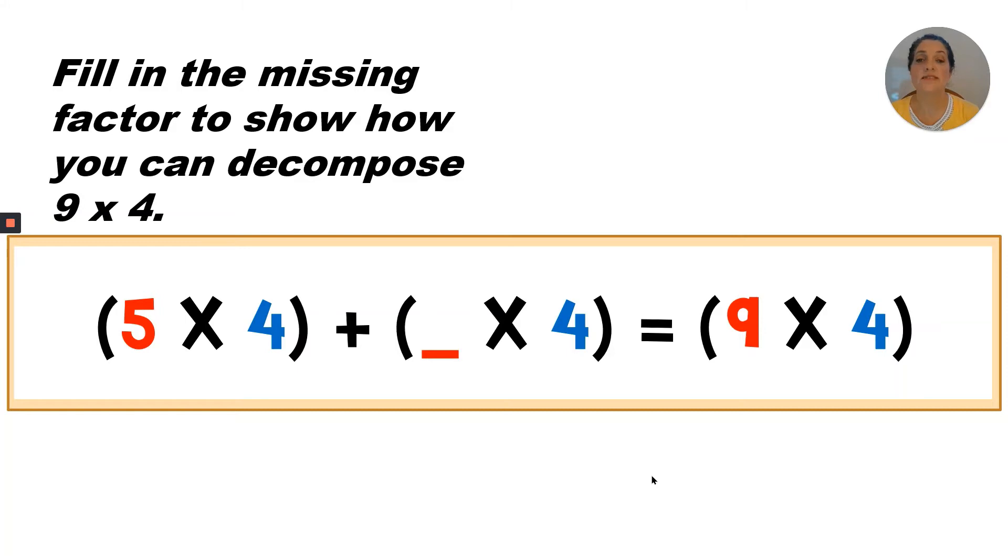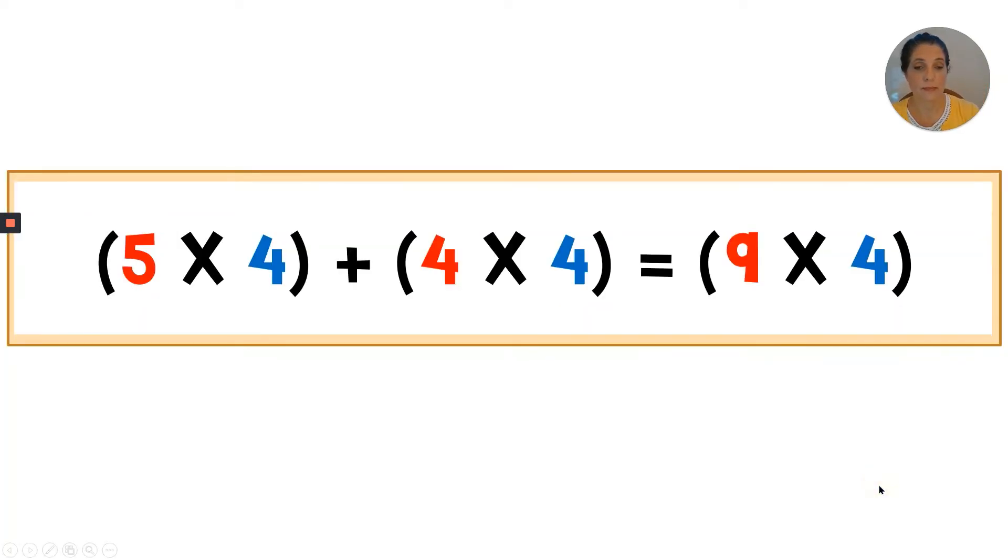Fill in the missing factors to show how you can decompose nine times four. So if we want to imagine nine rows of four, and we're starting with five rows of four, how many rows of four must we add to get to nine? Let's count up from five. Six, seven, eight, nine. We need to add four more rows of four. So the missing factor is a four.